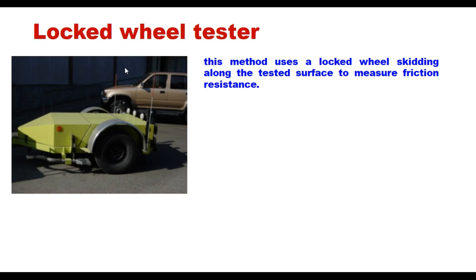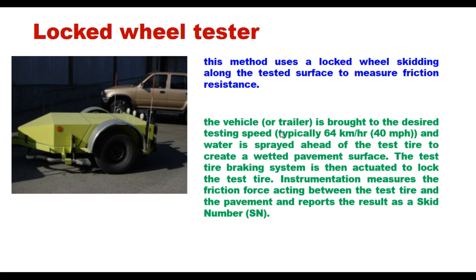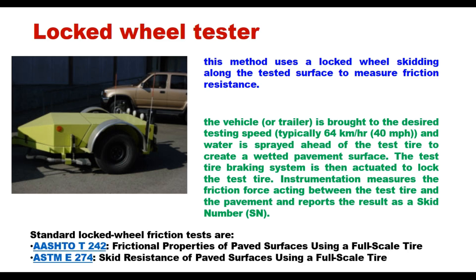The second method is the locked wheel tester, which uses a locked wheel skidding along the tested surface to measure friction resistance. The vehicle or trailer is brought to the desired testing speed — typically 40 miles per hour or 64 km/h — and water is sprayed ahead of the test tire to create a wetted pavement surface. The test tire braking system is then actuated to lock the test tire. Instrumentation measures the friction force between the test tire and the pavement and reports the results as a Skid Number (SN). This procedure is given in AASHTO T242 or ASTM E274.